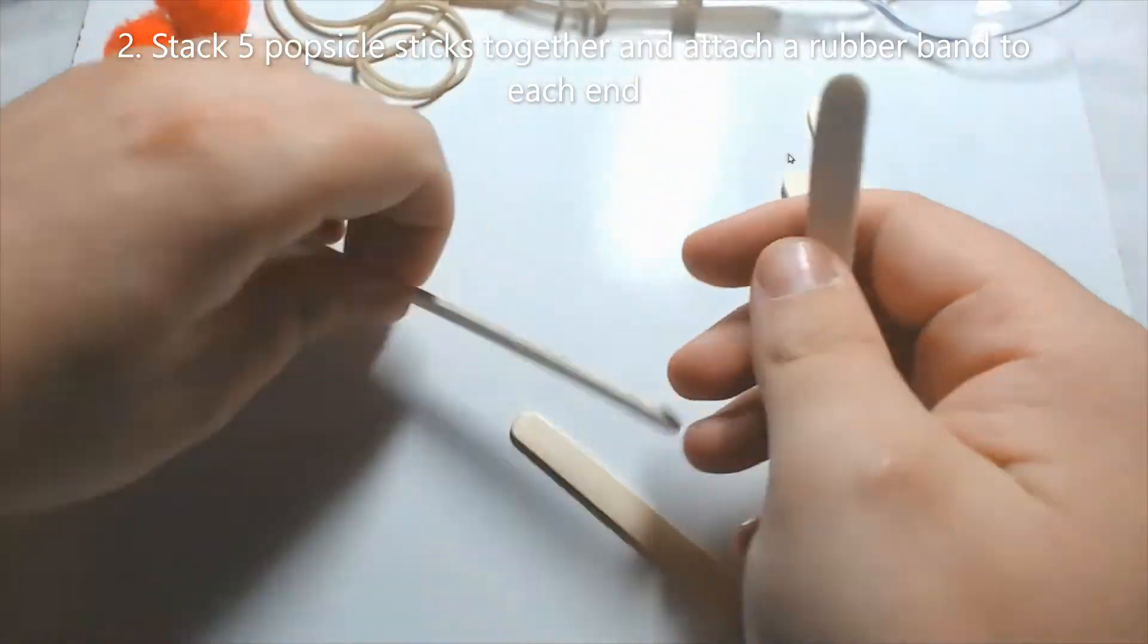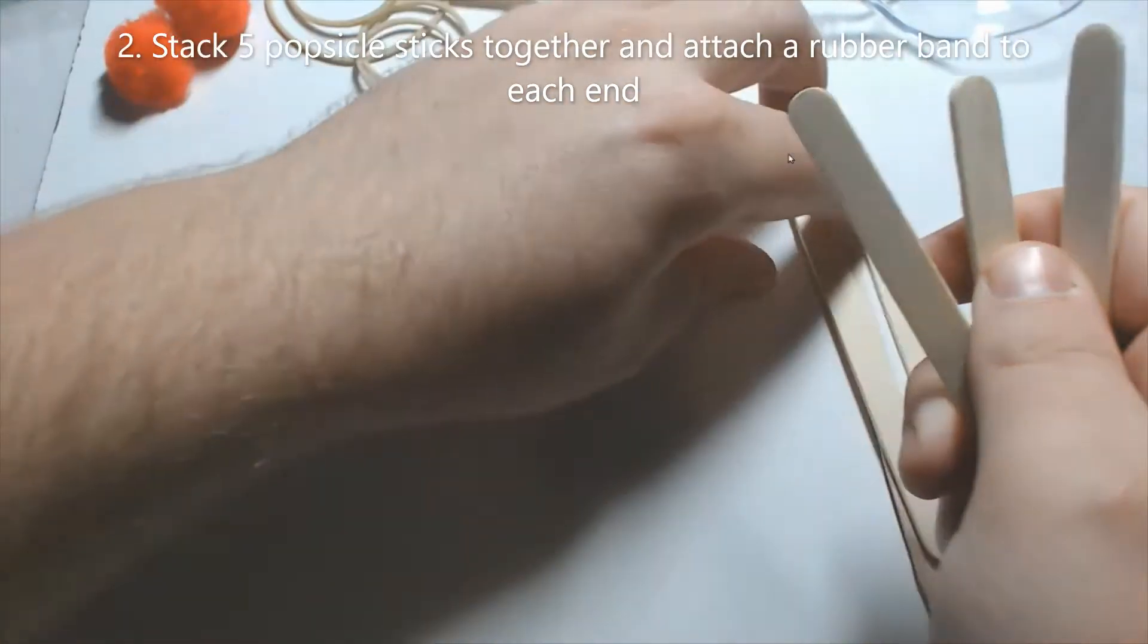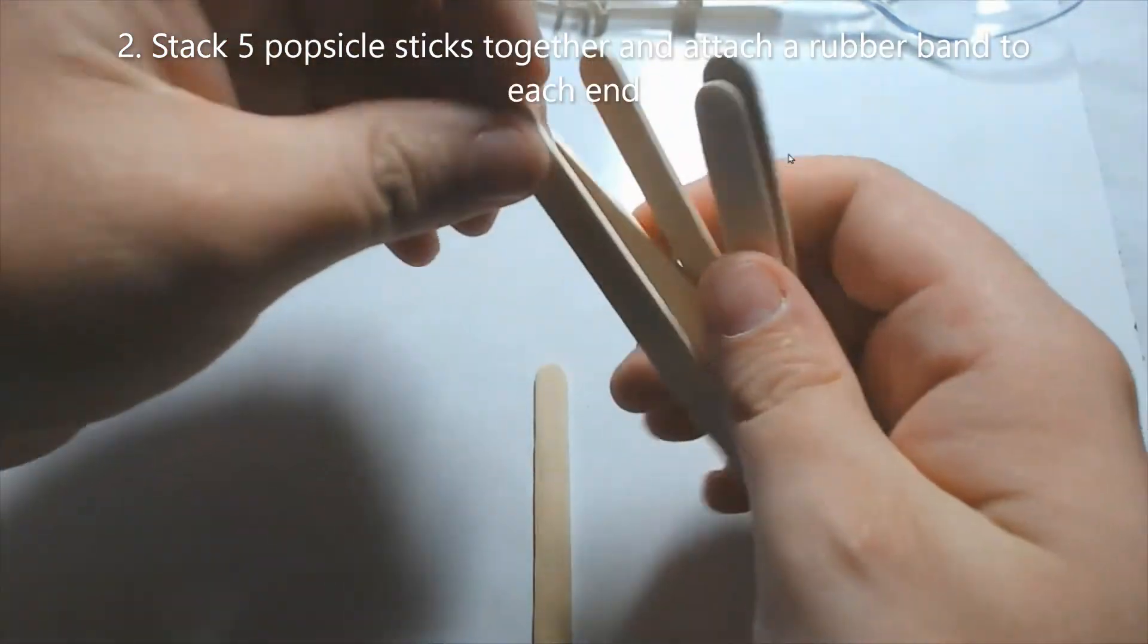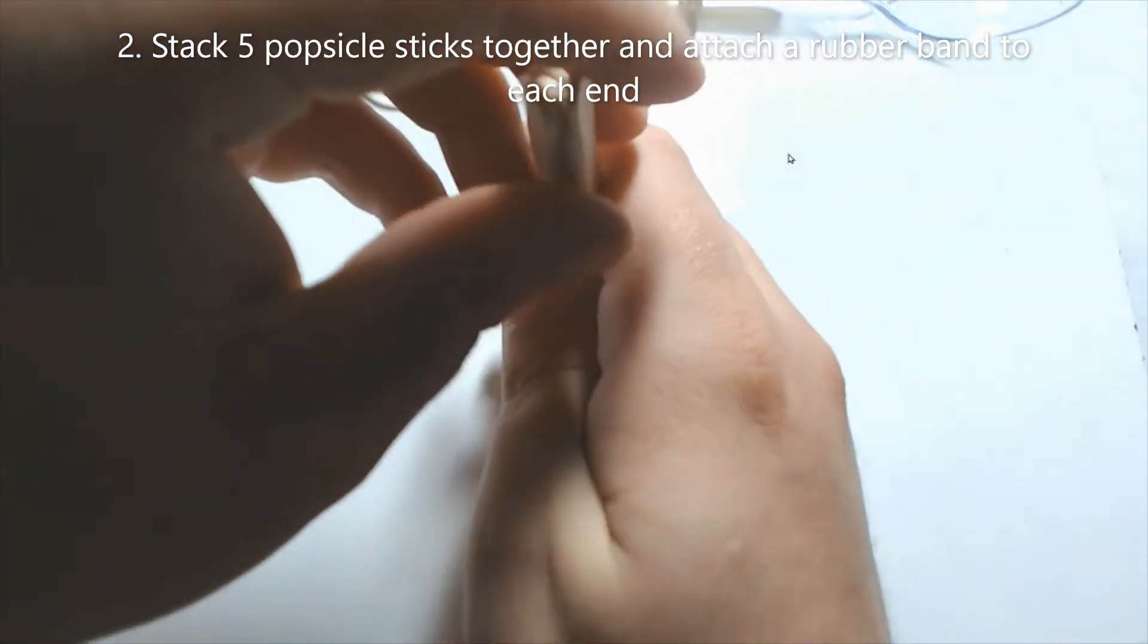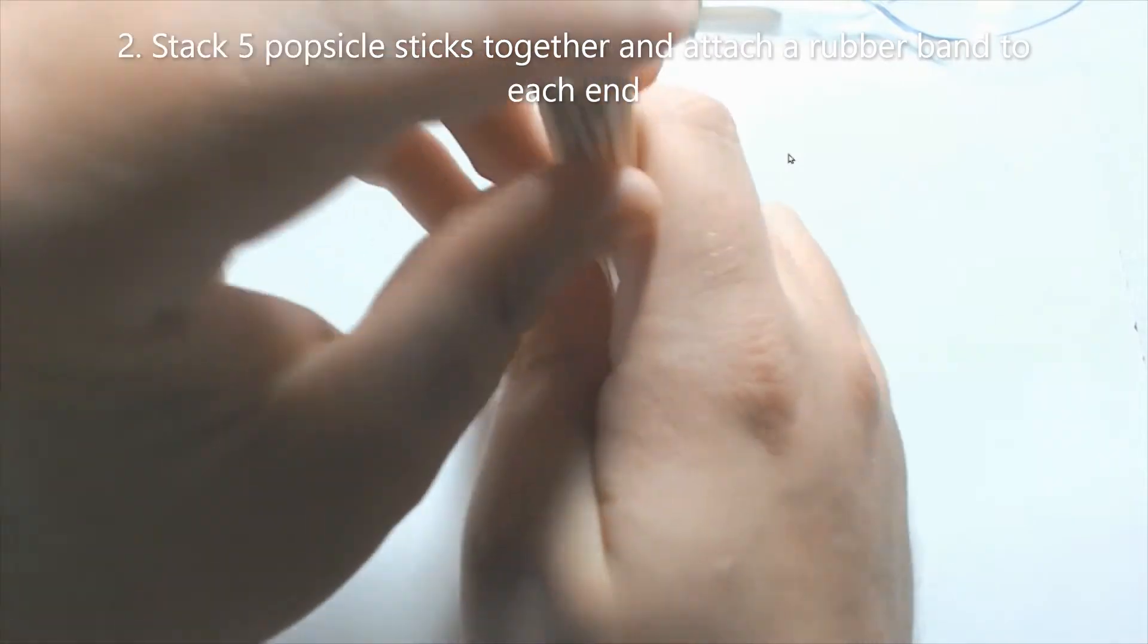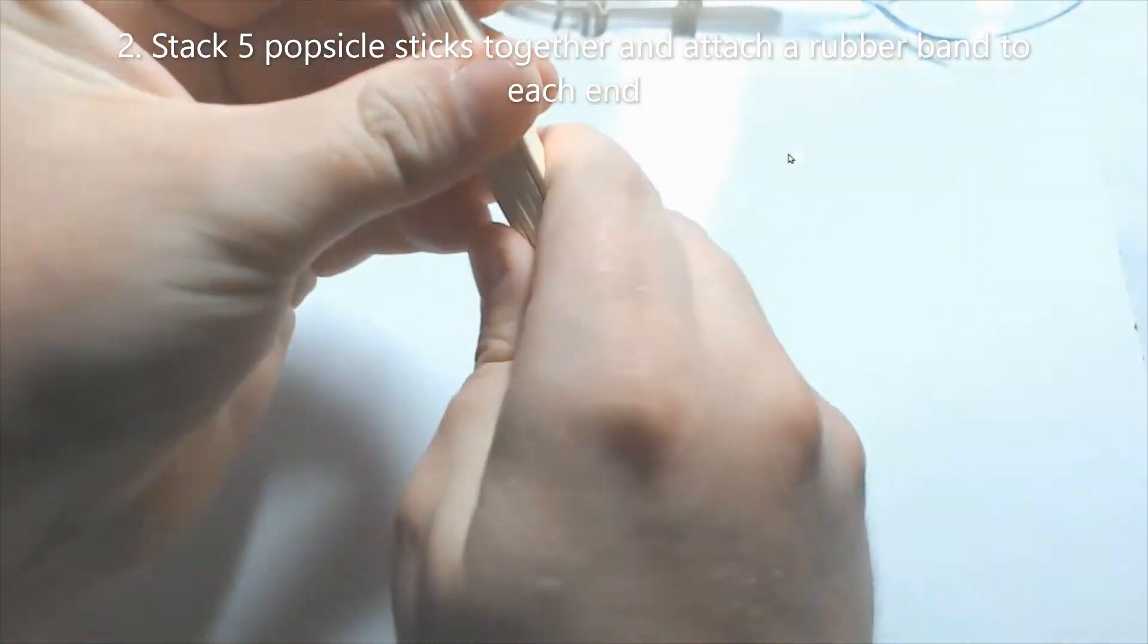All right, there's one piece. The next piece we're going to do is we're going to take five popsicle sticks. You're going to stack them one on top of the other.